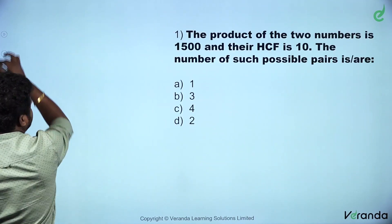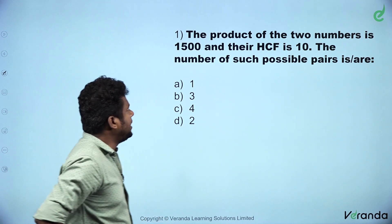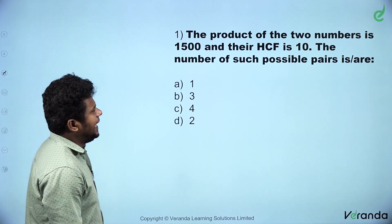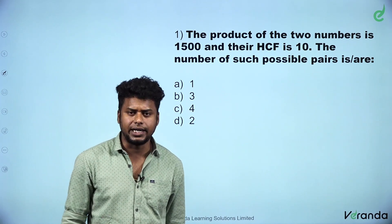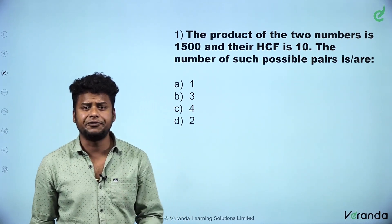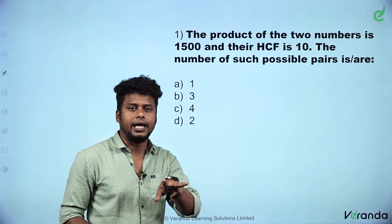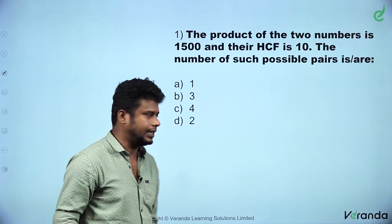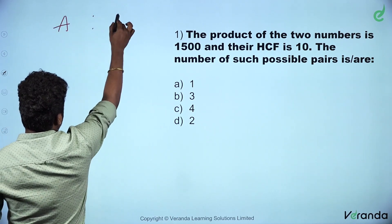Reasoning done. Now aptitude. The product of two numbers is 1500 and their HCF is 10. Any two numbers whose product is 1500 and HCF is 10 — then the value of the two numbers will be multiples of 10. So the two numbers are A and B.